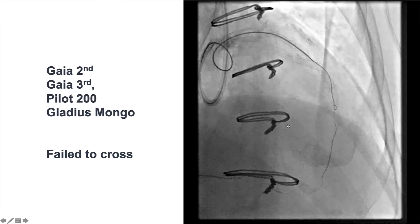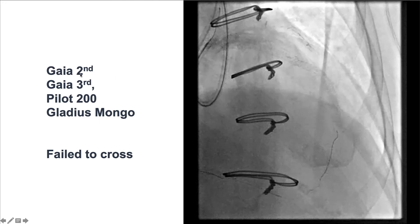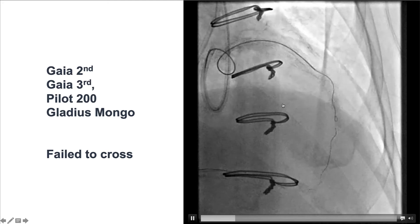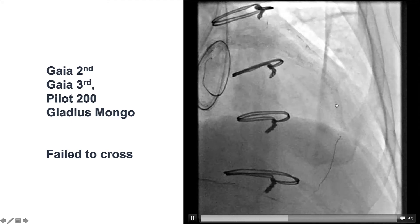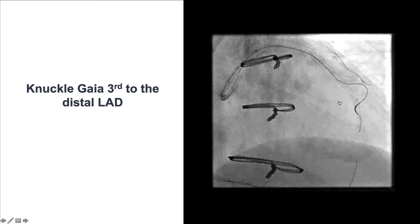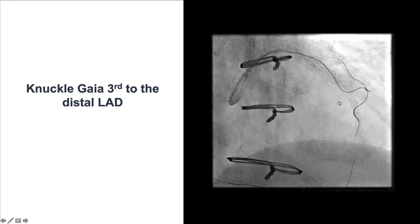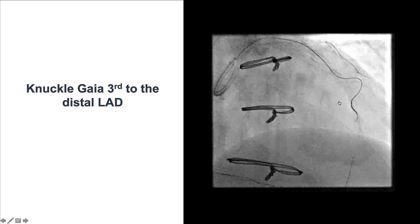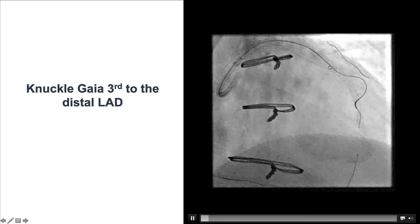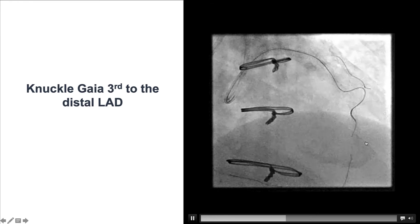We had significant difficulty advancing wires in the subintimal space, using Gaia 2nd, Gaia 3rd, Pilot 200, and Gladius Mongo without success. We then tried to knuckle guide wires. Eventually, with a knuckled Gaia 3rd — not our first choice for knuckle wire but a fairly supportive wire — we were able to advance the knuckled wire all the way past the previously placed stents.